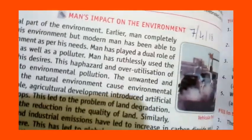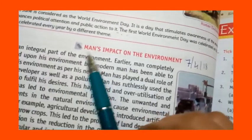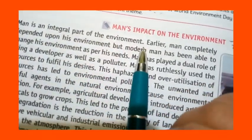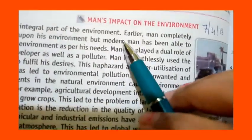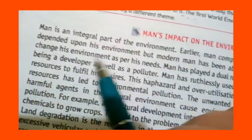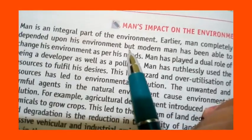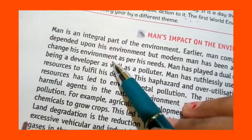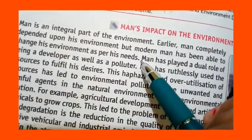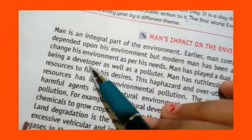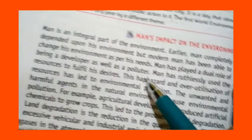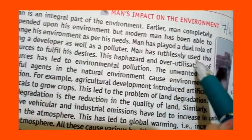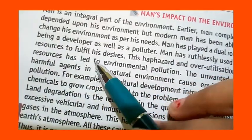Today we will continue chapter number 10. Today's topic is man's impact on the environment. Man is an integral part of the environment, but modern man has been able to change his environment as per his needs. Man has played a dual role of being a developer as well as a polluter. Man has ruthlessly used resources to fulfill his desires.